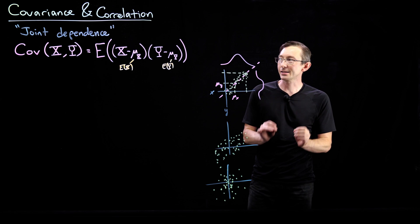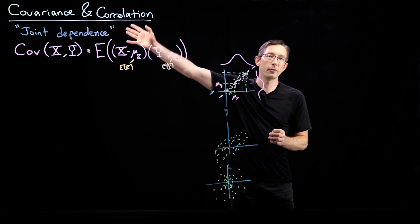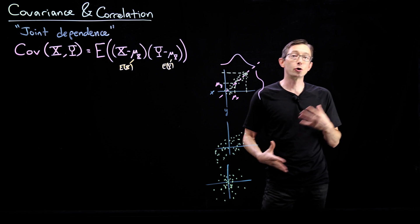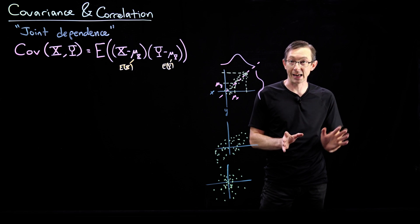Welcome back. Okay, so in the last lecture we introduced this notion of covariance and correlation, a really important property that allows me to tell the joint dependence of two random variables, x and y.